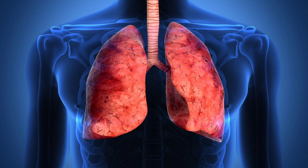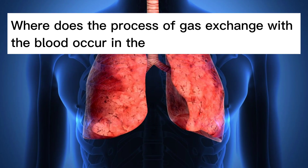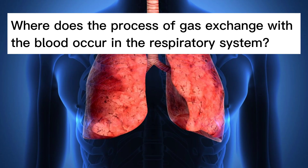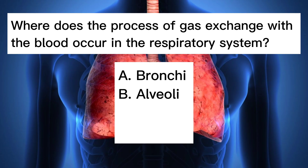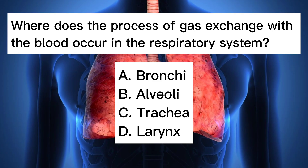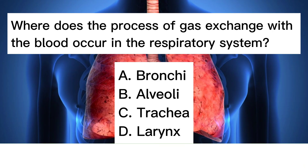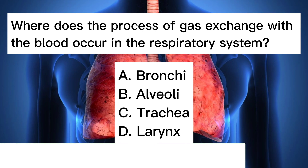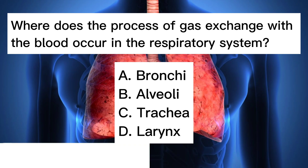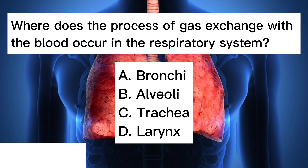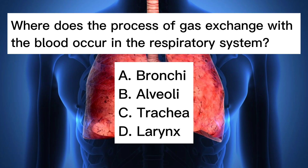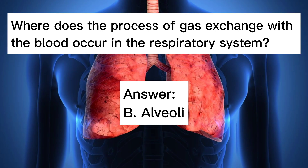Where does the process of gas exchange with the blood occur in the respiratory system? A. Bronchia. B. Alveoli. C. Trachea. D. Larynx. Answer: B. Alveoli.